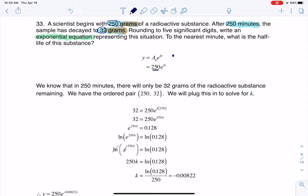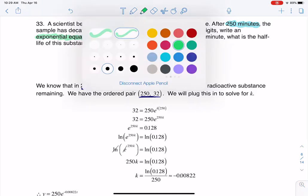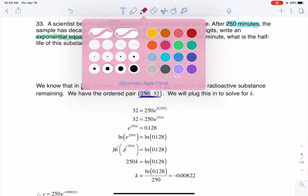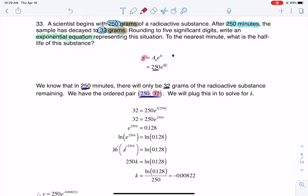So I do have another ordered pair. The other ordered pair they gave us was 250 minutes, I would have 32 grams. So I have this ordered pair of 250 and then 32, so what I'm going to do is quite literally, let me color code this, I'm going to take the 250 and plug it in for t, and then I'm going to take the 32 and plug it in for y.